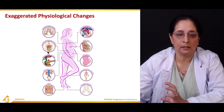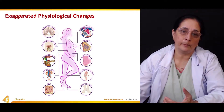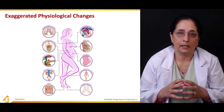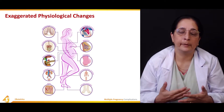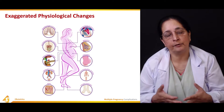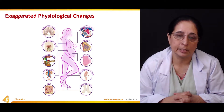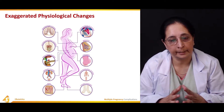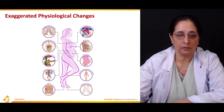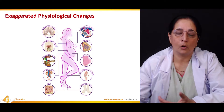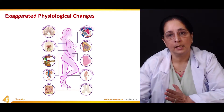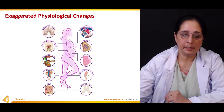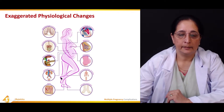The gastrointestinal system is affected — heartburn is very common due to pressure of the growing uterus on the stomach, causing an incompetent sphincter and regurgitation of food and acid into the esophagus. Constipation is also common during pregnancy. The endocrine system is also affected, with more hormones produced due to the increased demands of multiple pregnancy.